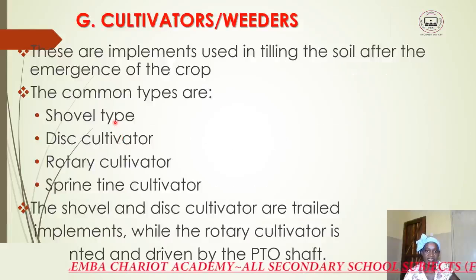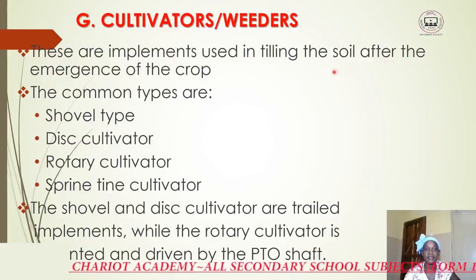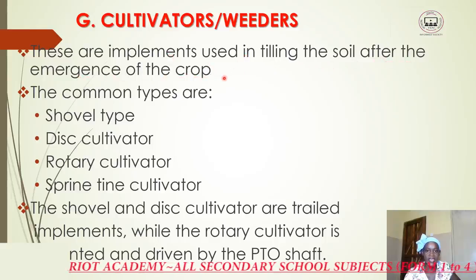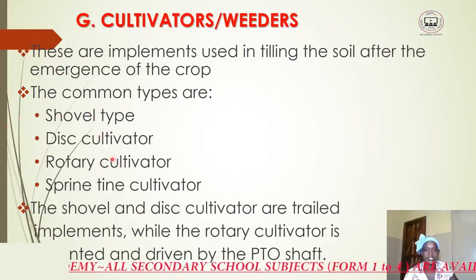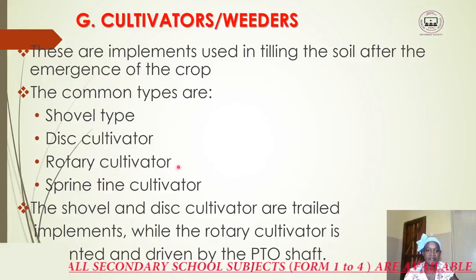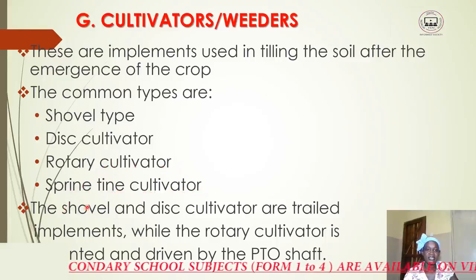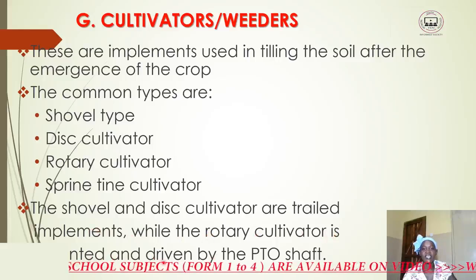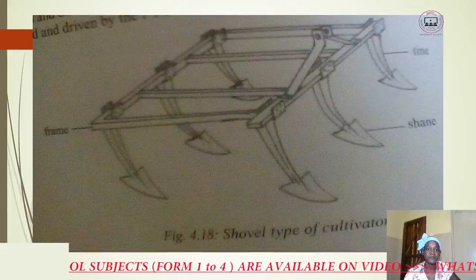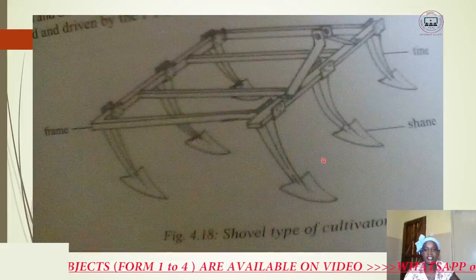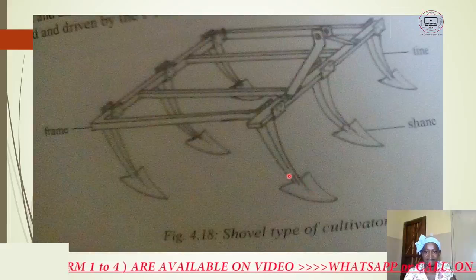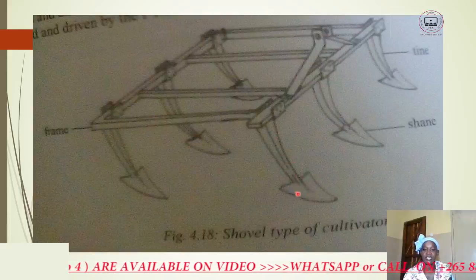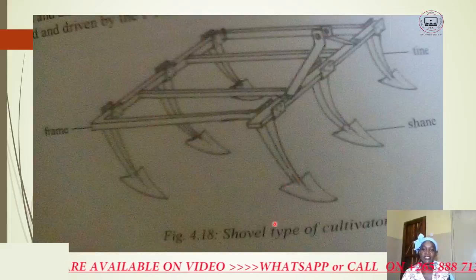We also have cultivators or weeders. These are implements used in tilling the soil after the emergence of the crop. There are four common types of cultivators: shovel type, disc cultivators, rotary cultivators, and spring-tine cultivators. The shovel and disc cultivators are trailed implements, while the rotary cultivator is mounted and driven by the power take-off shaft. As you can see, at the tip of the shovel type cultivator is a structure that looks like a shovel — that's why it is called the shovel type cultivator.